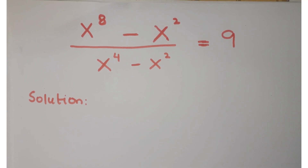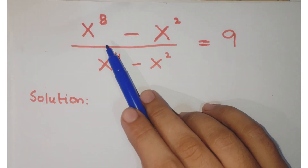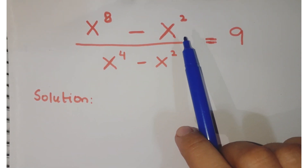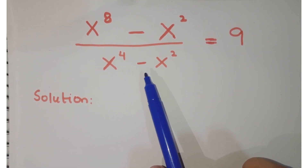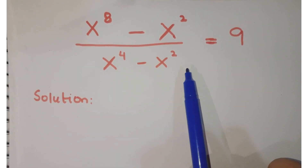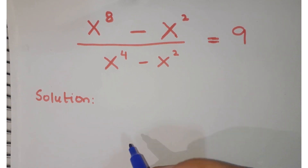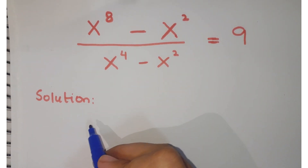Hello friends, welcome to the learning curve. Look at this question: x to the power 8 minus x to the power 2, upon x to the power 4 minus x to the power 2, is equals to 9. Let's see how we proceed in this question.